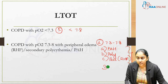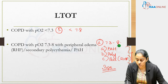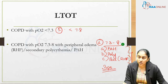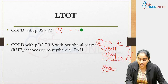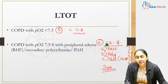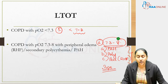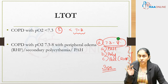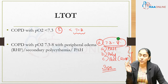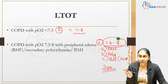To clarify: whenever PO2 is less than 7.3 in COPD, LTOT is indicated. If PO2 is between 7.3 and 8, but the patient has one of the three P's — secondary polycythemia, PAH (pulmonary artery hypertension), or cor pulmonale — LTOT is still required. These are the four major indications for LTOT.